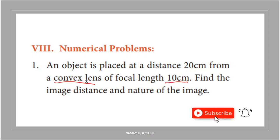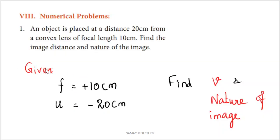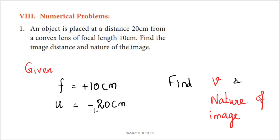In the question, the focal length of the convex lens is given. The symbol for focal length and object distance u are noted. Sign convention: for a convex lens, focal length f is positive, so f equals plus 10 centimeters. The object distance u is negative, so u equals minus 20 centimeters. We need to calculate the image distance v and the nature of the image.